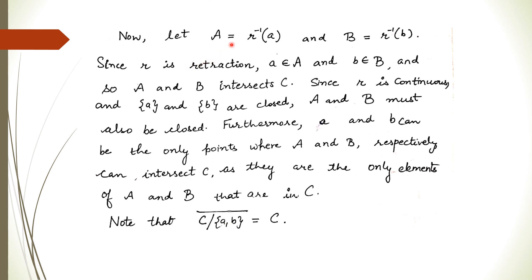Let R-inverse of A be the set capital-A and R-inverse of B be the set capital-B. Since R is a retraction, point A on the boundary maps to A, so A belongs to capital-A. Similarly, point B belongs to capital-B. So capital-A and capital-B have A and B as common points with the boundary C, and these are the only points where they intersect C.